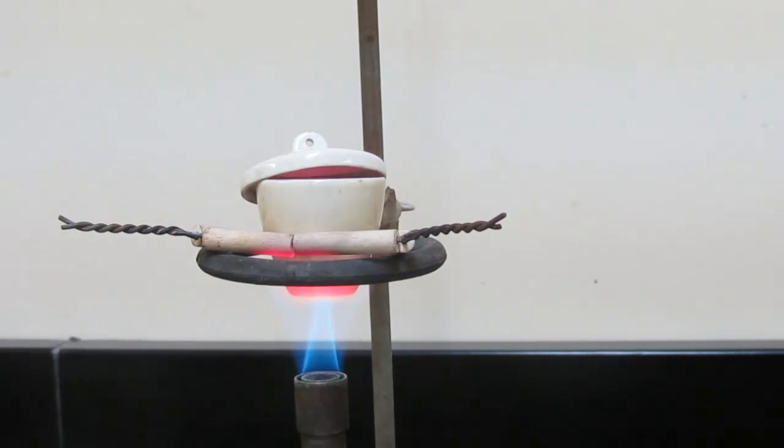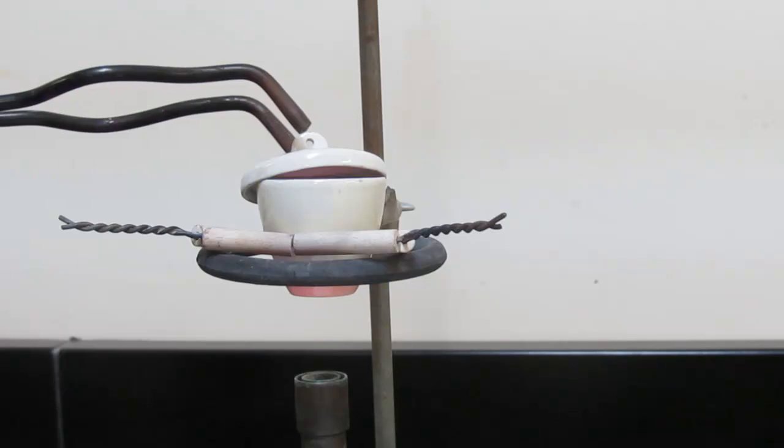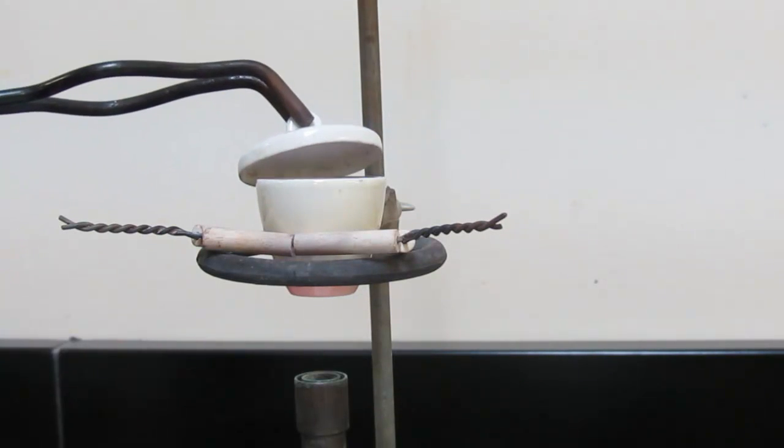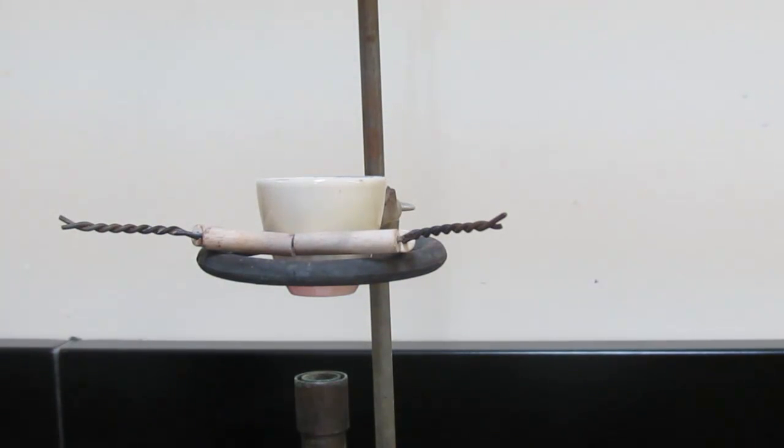So we'll go ahead and shut the heat off now. And we'll shut that off. We can remove the lid at this time. Once again, please use your crucible tongs. This is very, very hot at this time. You will burn yourself quite badly if you're not careful.